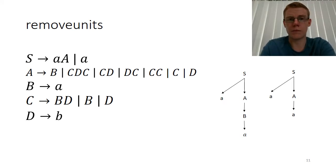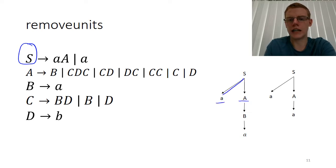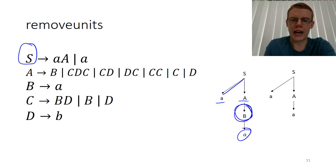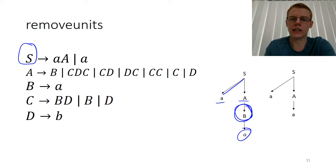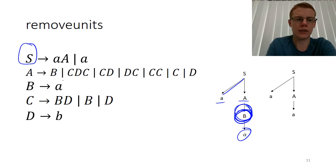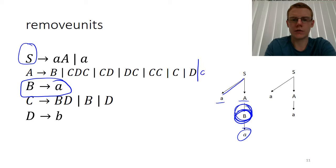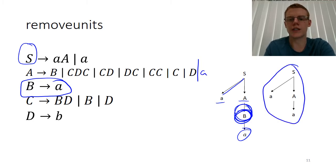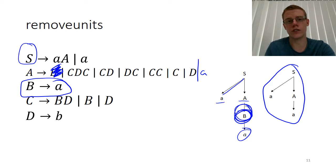A concrete example: starting with start non-terminal S, we produce little a and big A, then use a unit production to produce just little a. If we remove the A goes to B production, there's no way to turn that A into little a, so we can't produce the string AA anymore. To fix this, we take all the right-hand sides of B and add them as right-hand sides of A — in this case, adding A goes to little a — so we can still produce AA without the unit production.